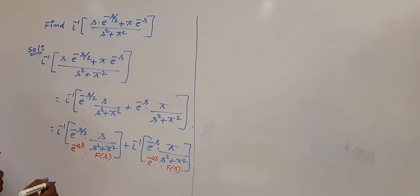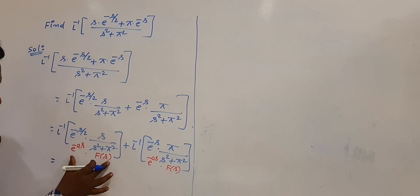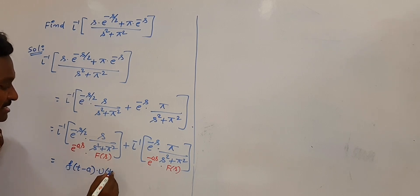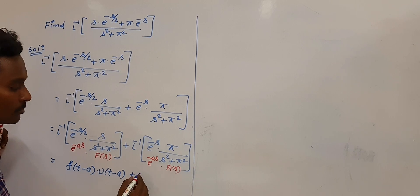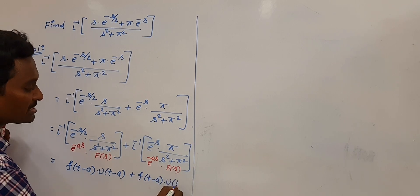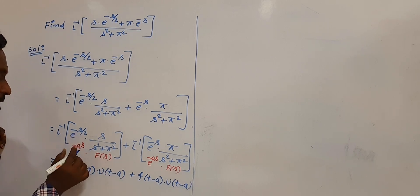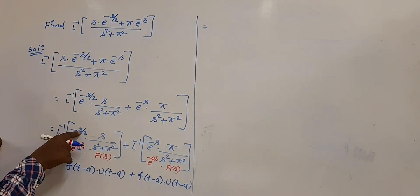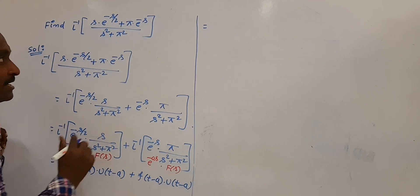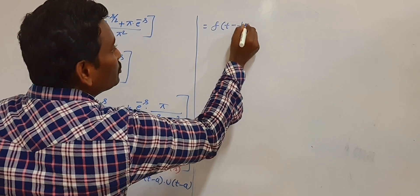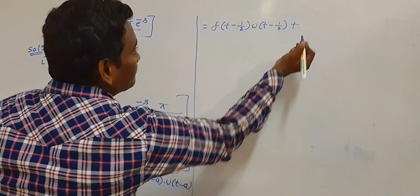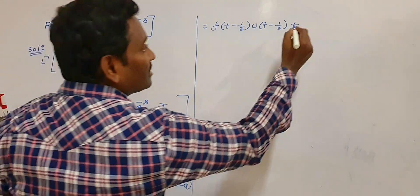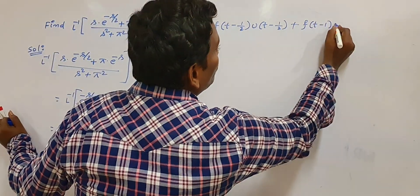According to the second shifting theorem on inverse Laplace, the result is f(t−a)·u(t−a). We apply the same rule to both parts, but a is different in each. The value of a is the coefficient of s in the exponential. In the first part, a = 1/2 — do not take a negative sign. In the second part, a = 1. So the result is f1(t−1/2)·u(t−1/2) + f2(t−1)·u(t−1). Call this equation (1).